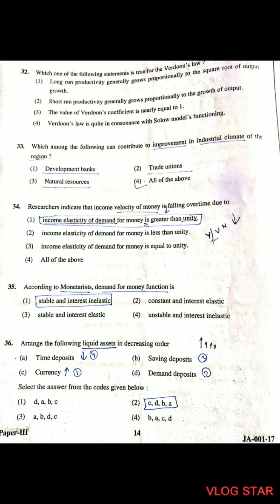Question 33: Which among the following can contribute to improvement in the industrial climate of a region? Development banks, trade unions, and natural resources — all of these will contribute to the improvement in the industrial climate of the region.